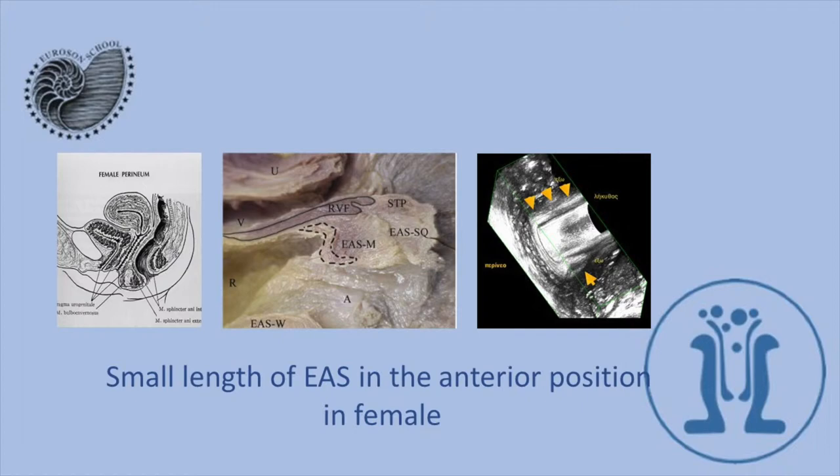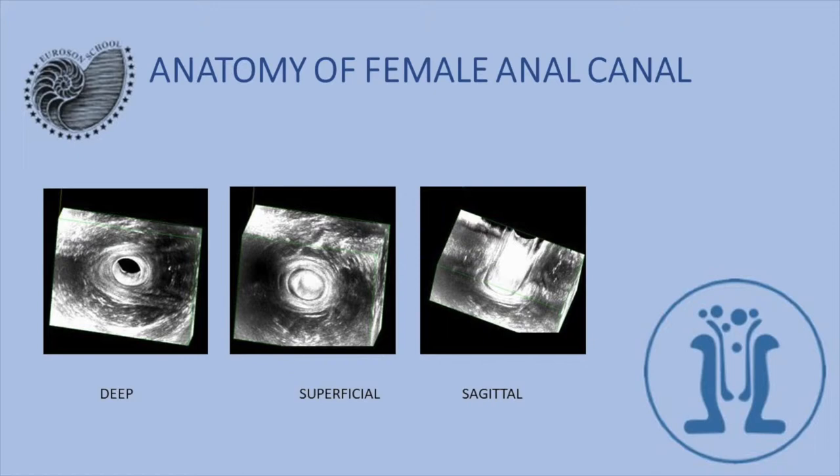Here is the anatomy of the anal sphincter in the deep position. Here is the vagina, and in the superficial position we see that the external sphincter is only at the superficial level. In the deep position there is no external sphincter, and here is the puborectalis muscle. Here we see the sagittal image of the anal sphincters.